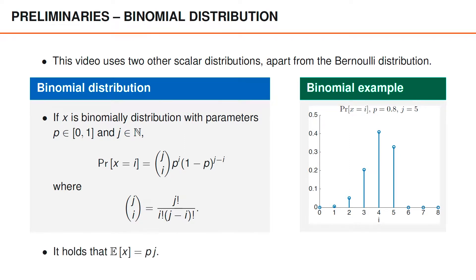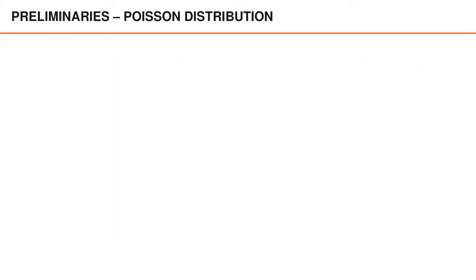One specific property which is useful to understand the arguments in this video is that the expected value of x is p times j. To understand this, it may help to think about the case when j is equal to one, for which it is easy to verify that the expected value of x is p. If j is two or larger, we perform several independent trials, each with expected value p, which gives us p times j as the total expected value. In this example, the expected value is four.